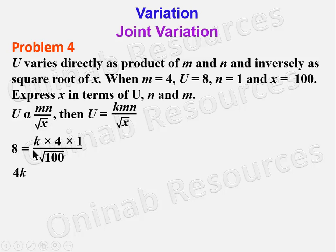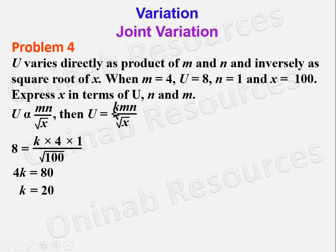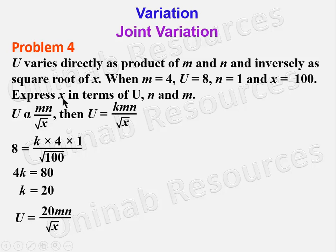Cross-multiplying: √100 = 10, so 10 × 8 = 80 = 4k. Dividing both sides by 4 gives k = 20. Substituting k = 20, the formula is u = 20mn/√x.